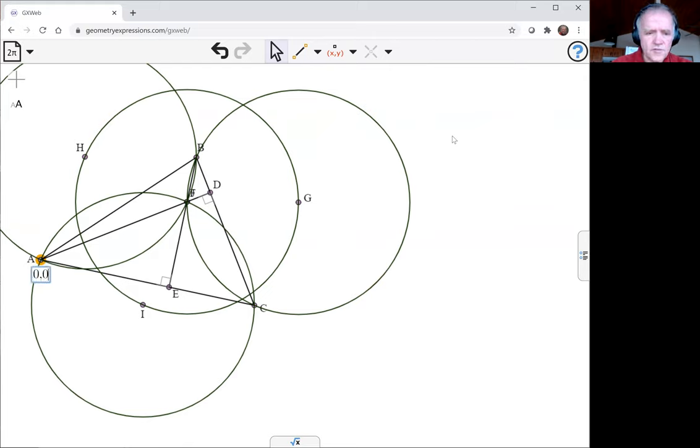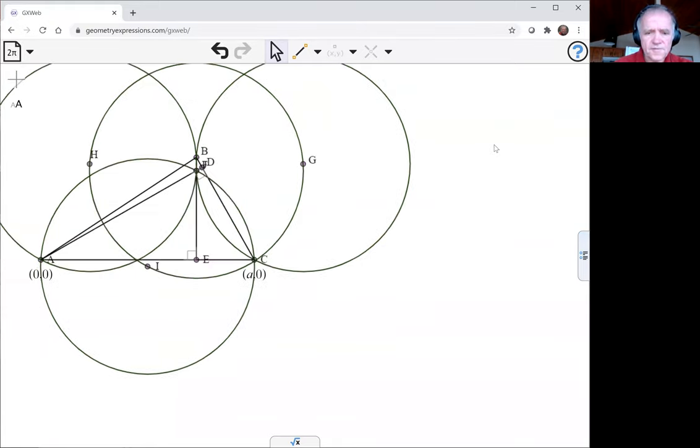Make point A, zero, zero. Point C, B, zero. Now, of course, this is not the same A as we had before.